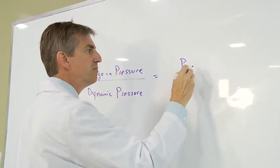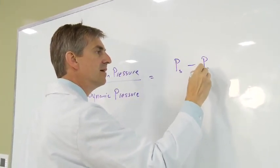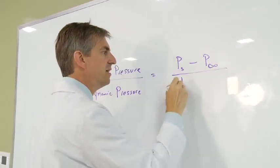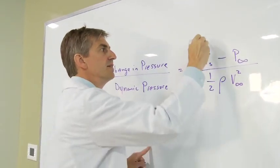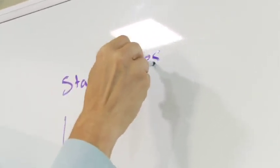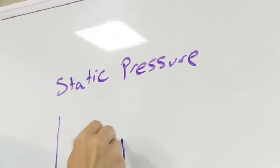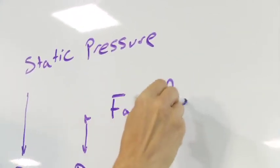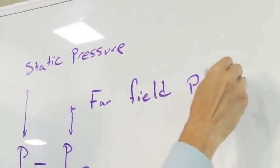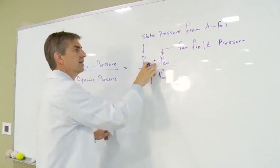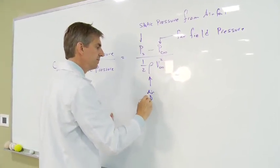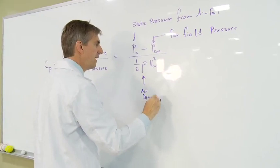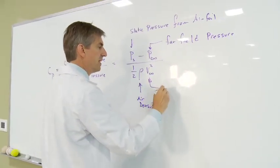The equation for this is pressure, this is the static pressure that we measure, minus the far field pressure divided by the dynamic pressure. So this is static pressure from the airfoil divided by the far field pressure. We subtract the far field pressure. And then this is the air density and the free stream velocity.